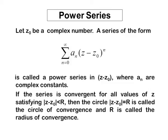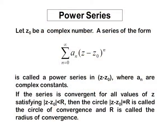Power series, the way we have understood for real functions, is similarly defined in the case of functions of a complex variable. Suppose z0 is a complex number. A series of the form: summation n equals 0 to infinity of a_n times (z minus z0) raised to the power n is called a power series in (z minus z0). Here z0 is a constant and the a_n's are complex constants. This series may converge or diverge. If the series converges for all values of z such that |z minus z0| < r, then the circle |z minus z0| = r is called the circle of convergence and r is named the radius of convergence. Within the circle the series converges; otherwise it diverges.